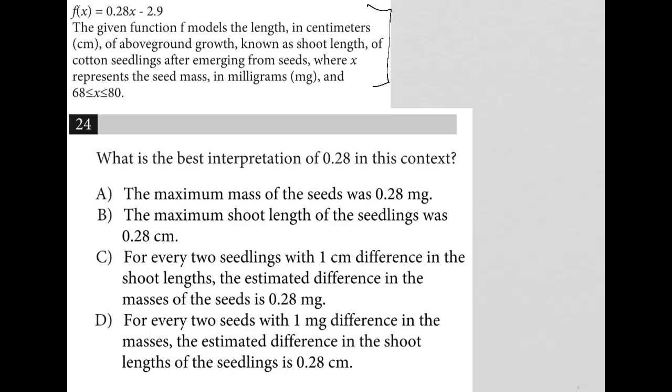The information provided prior to the question gives us this linear function f(x) equals 0.28x minus 2.9. We're also told that function models the length in centimeters of above ground growth, known as shoot length, of cotton seedlings after emerging from seeds, where x represents the seed mass in milligrams and is between 68 and 80. So the mass of these seeds are somewhere between 68 and 80 milligrams.